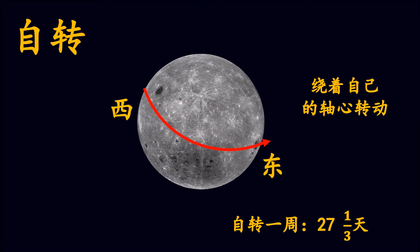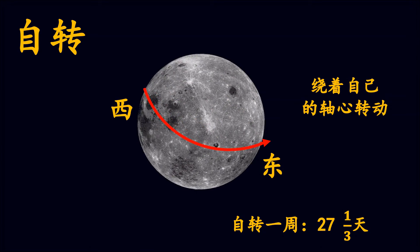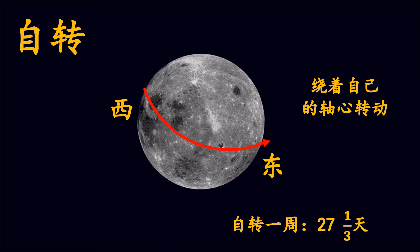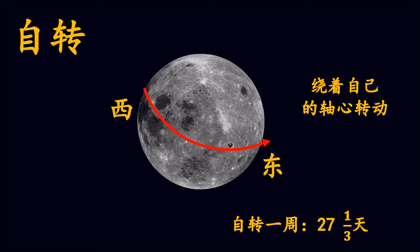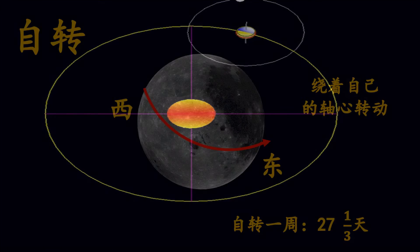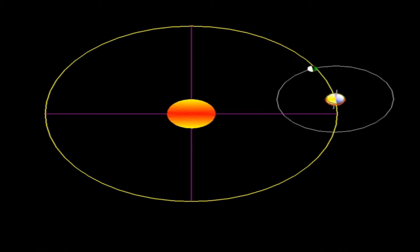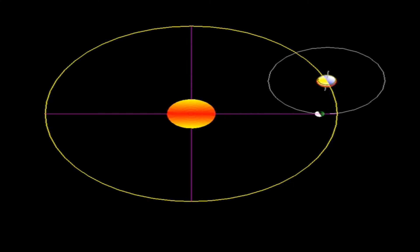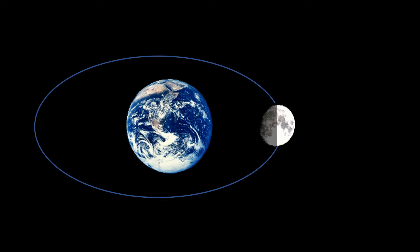月球的自转是月球绕着自己的轴心转动，由西转到东，逆时针的方向运转。月球自转一周的时间是27又三分之一天。月球在自转的同时也会绕着地球转动，月球绕着地球转动就是月球的公转。(The Moon's rotation is the Moon spinning around its own axis, west to east, counterclockwise, taking 27⅓ days. While rotating, the Moon also orbits around the Earth — this is called revolution.)